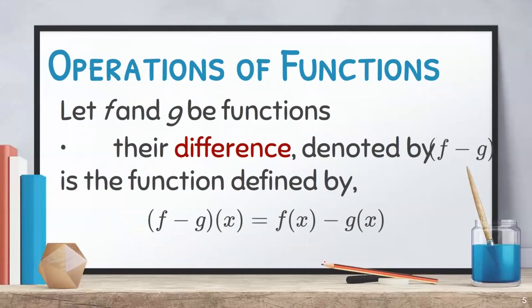For subtracting functions, let f and g be functions. Their difference, denoted by f minus g, is the function defined by f minus g of x equals f of x minus g of x. The difference of the functions is solved by subtracting the involved functions f of x and g of x.